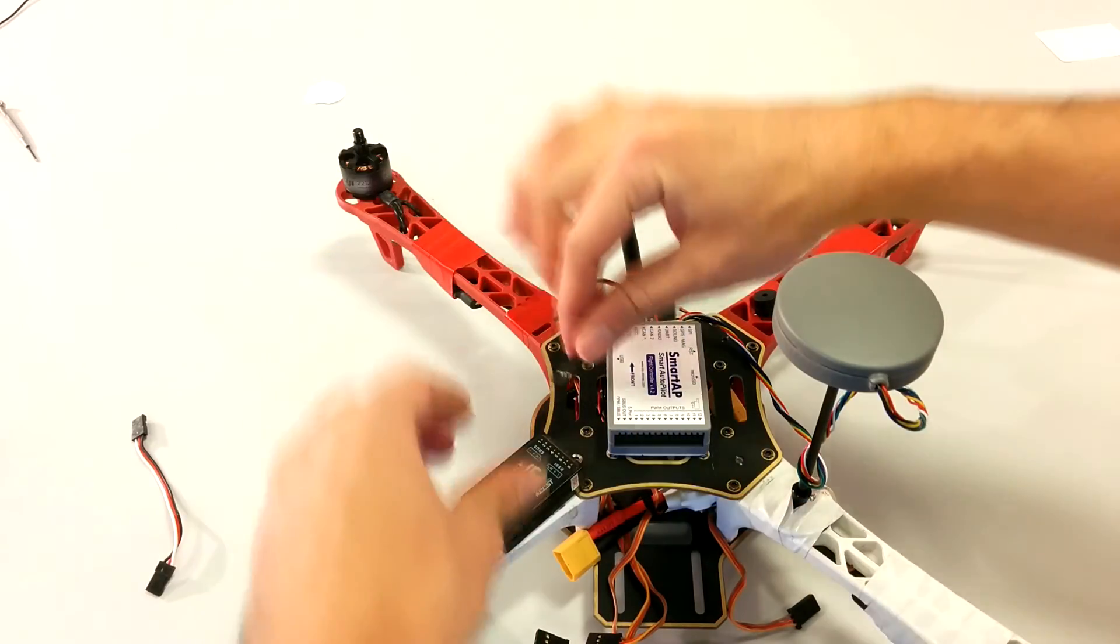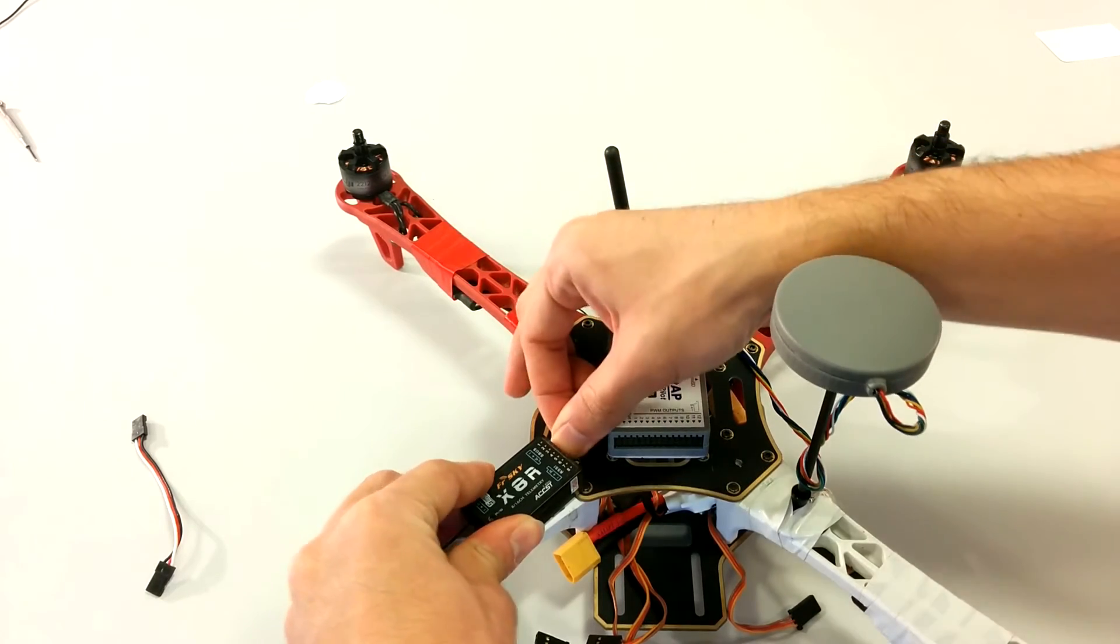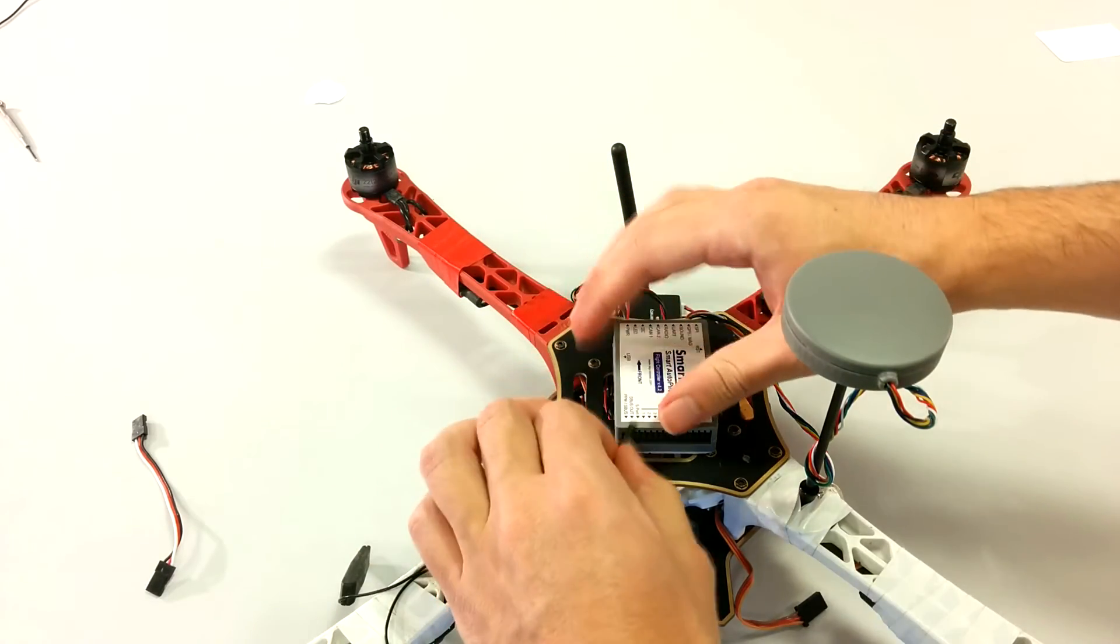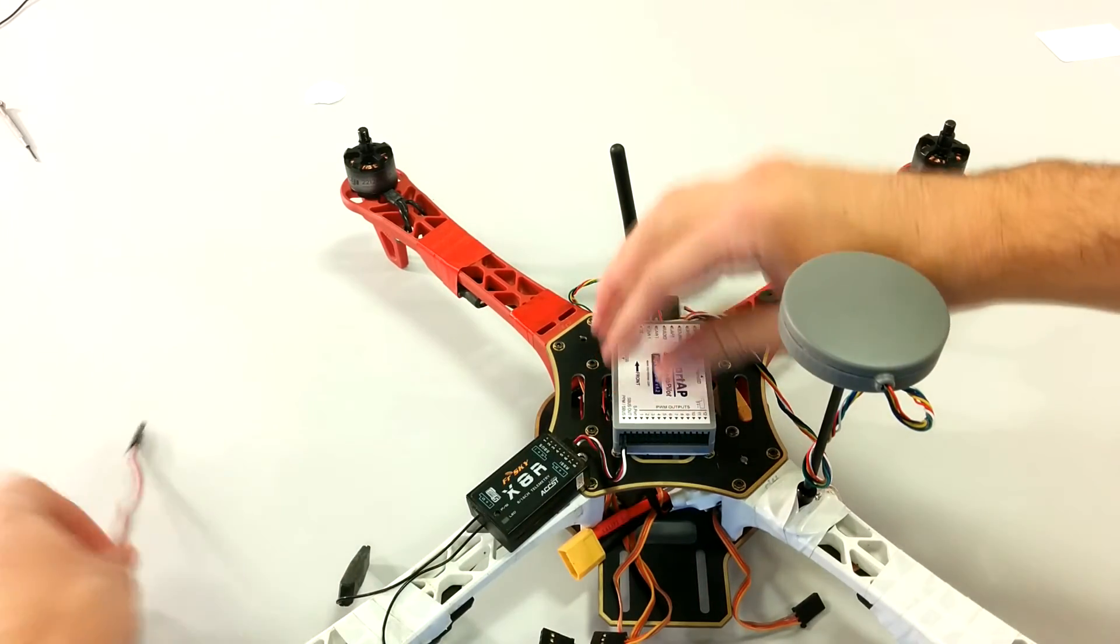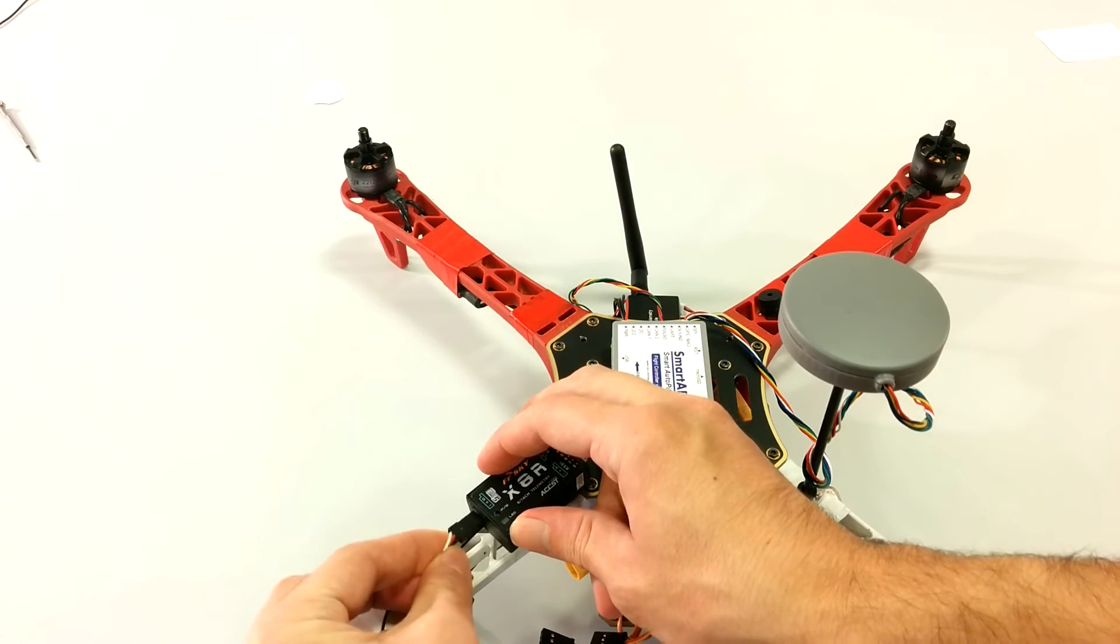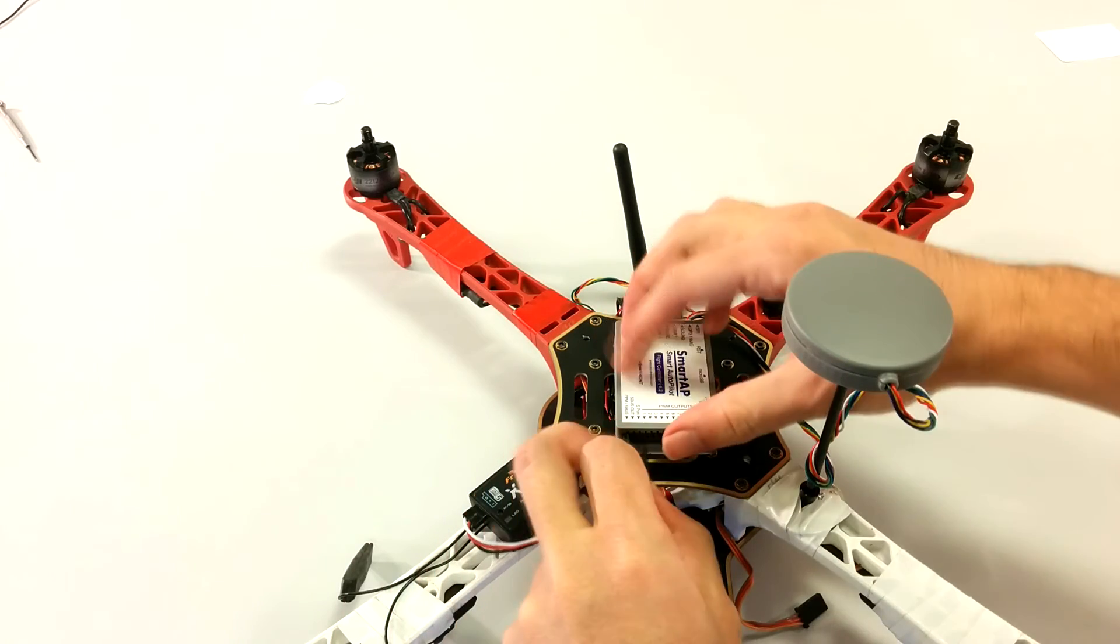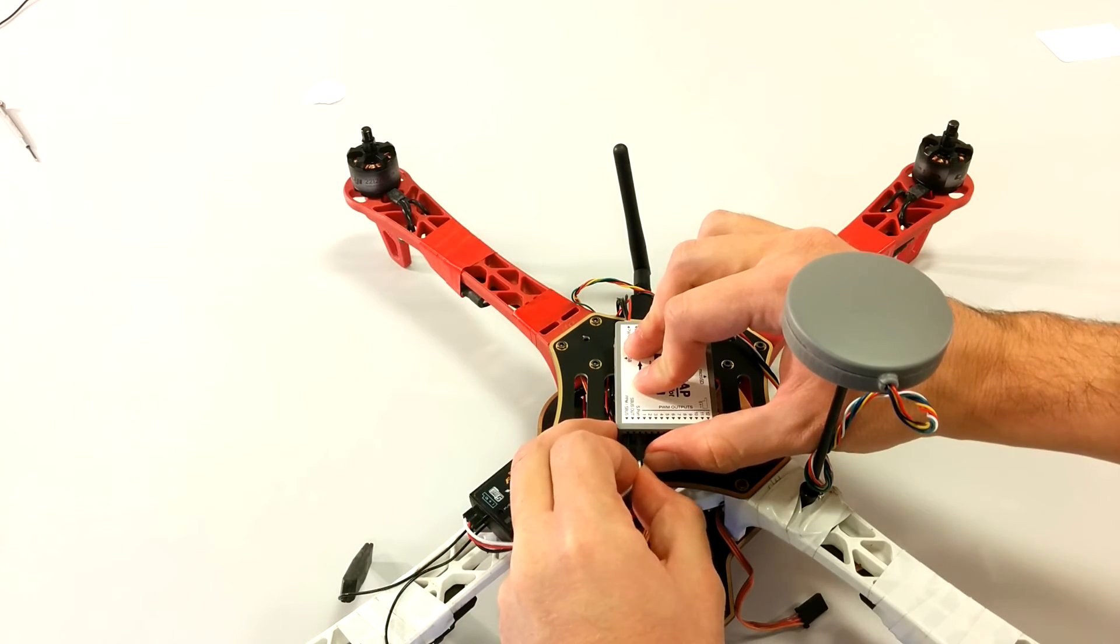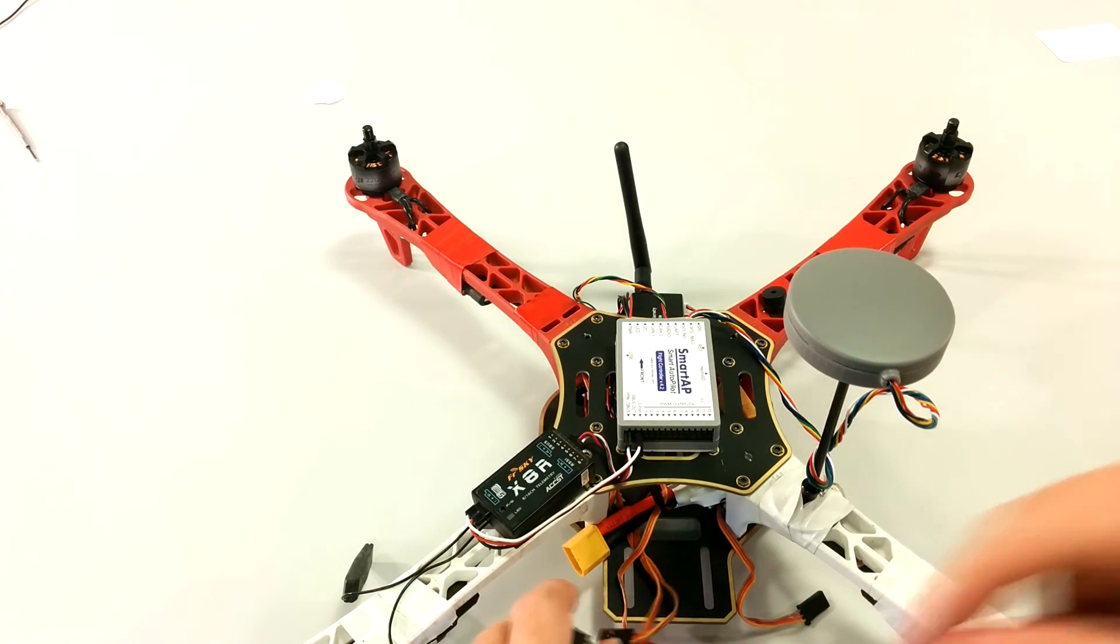RC receiver PPM or SBUS cable goes to PPM SBUS port of the flight controller. If you would like to use S port functionality of your receiver to get real-time telemetry on your transmitter, you can simply connect S port of the autopilot to S port of the flight controller with a 3 wire cable. No additional boards or converters needed. Everything is already integrated for your convenience.